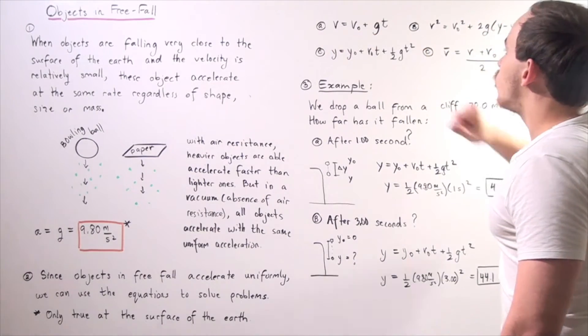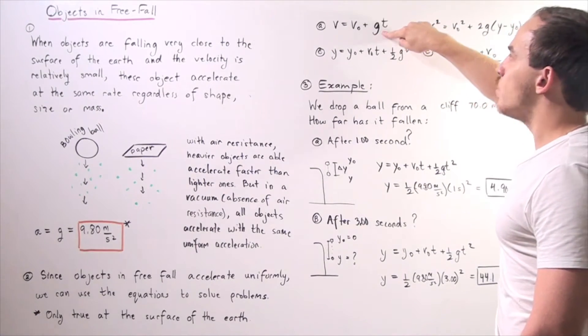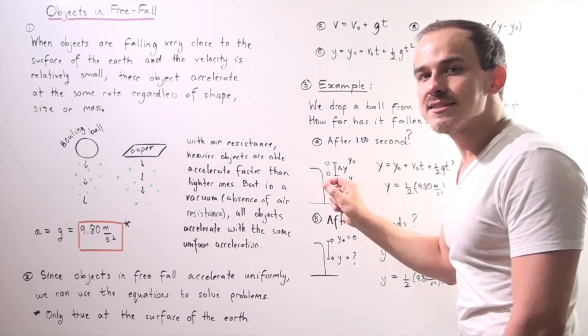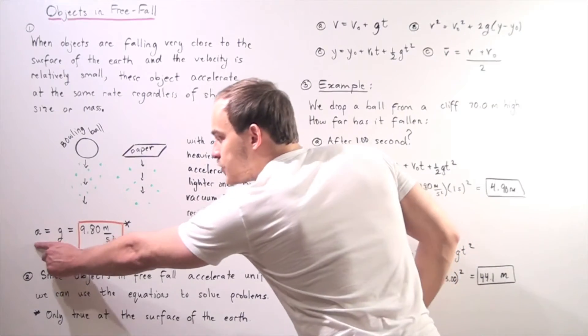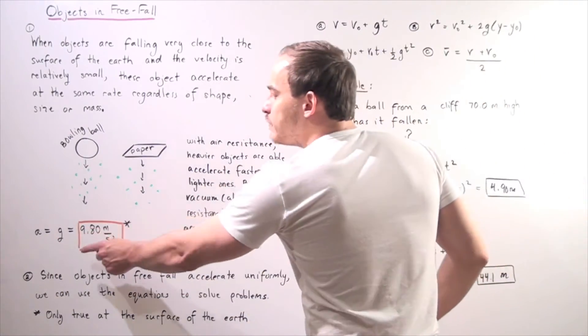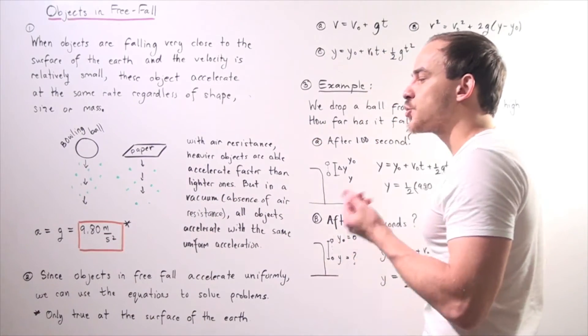This is our equation. We replace our acceleration a with g and it's known as our gravitational constant. So our acceleration equals our g, our gravitational constant, and it's equal to 9.8 meters per second squared.